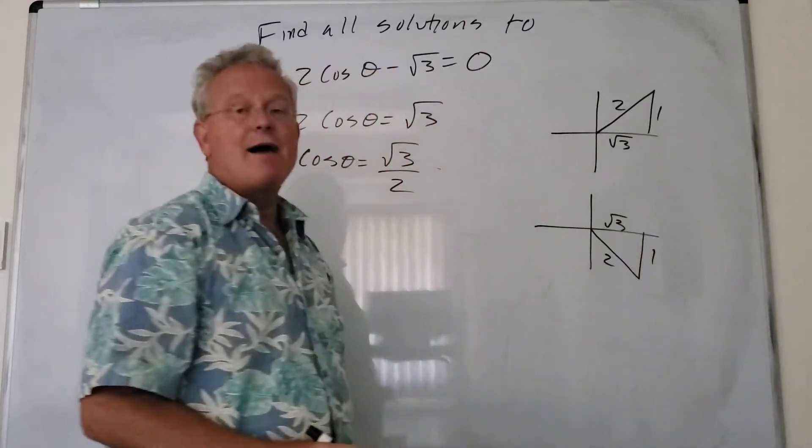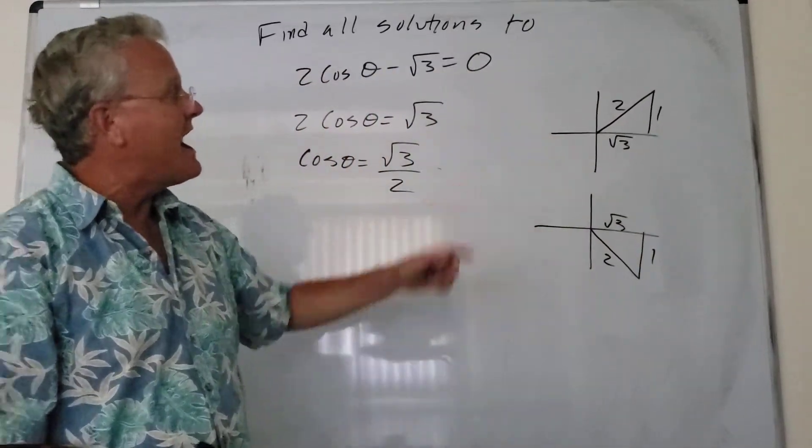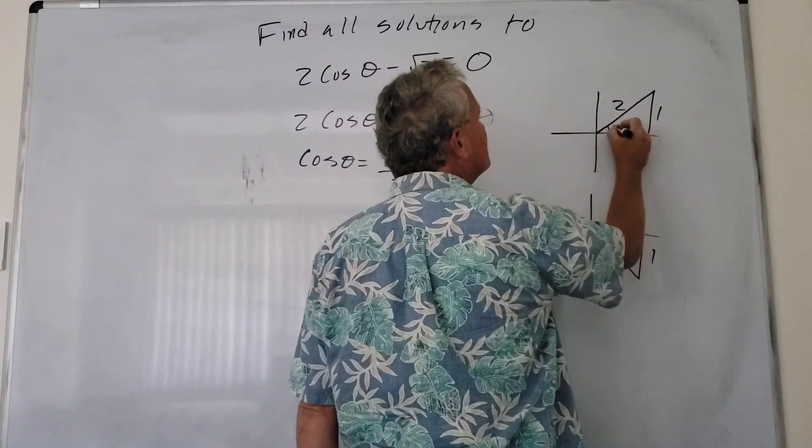And we know that this is the 30, 60, 90 triangle, opposite 1, and our angle is 30 degrees.